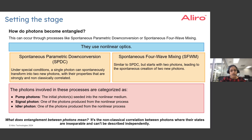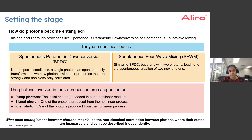So how do we generate these entangled photons? Here we'll be focusing on using nonlinear optical processes to do this. Specifically, we'll be talking about mainly spontaneous parametric downconversion or SPDC and spontaneous four-wave mixing or SFWM.